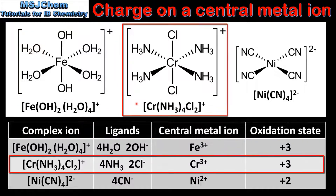In our next example the central metal ion is a chromium ion. The ligands are 4 ammonia molecules and 2 chloride ions. Chloride ions are negatively charged, so the total charge on the ligands is 2-. Subtracting the total charge on the ligands from the charge on the complex ion, we can determine that the charge on the central metal ion is 3+ and the oxidation state is +3.